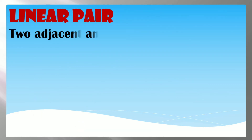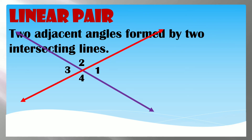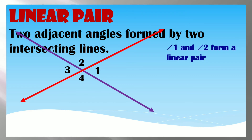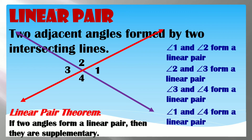A Linear Pair consists of two adjacent angles formed by two intersecting lines. In this figure, there are four linear pairs: Angle 1 and Angle 2, Angle 2 and Angle 3, Angle 3 and Angle 4, and Angle 1 and Angle 4.